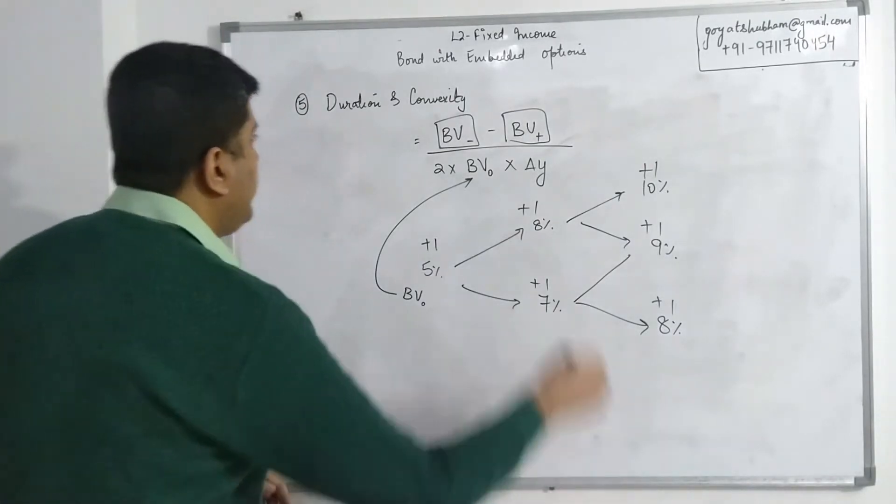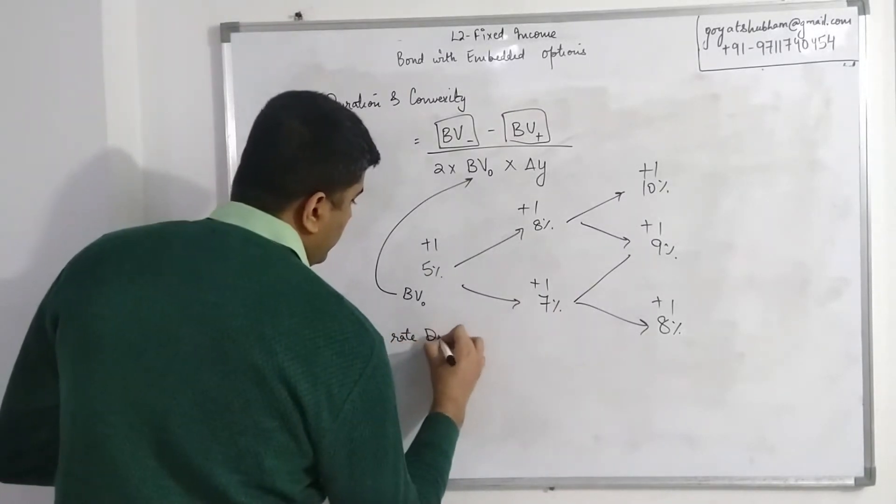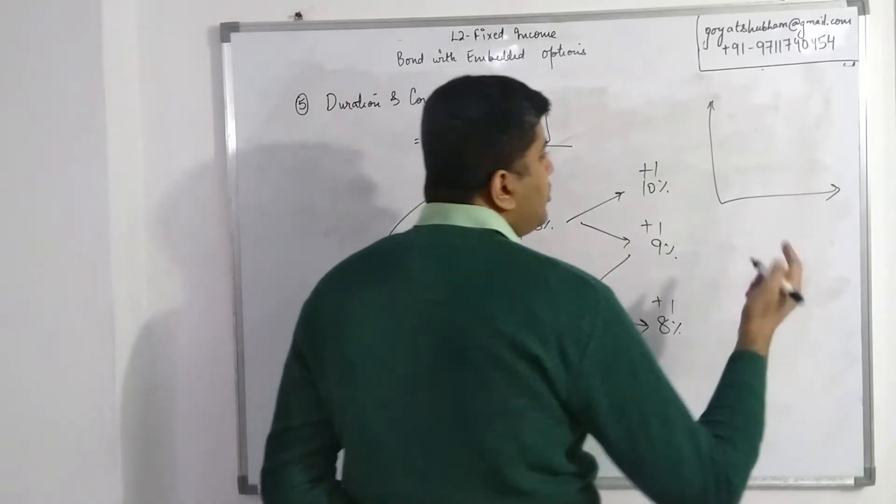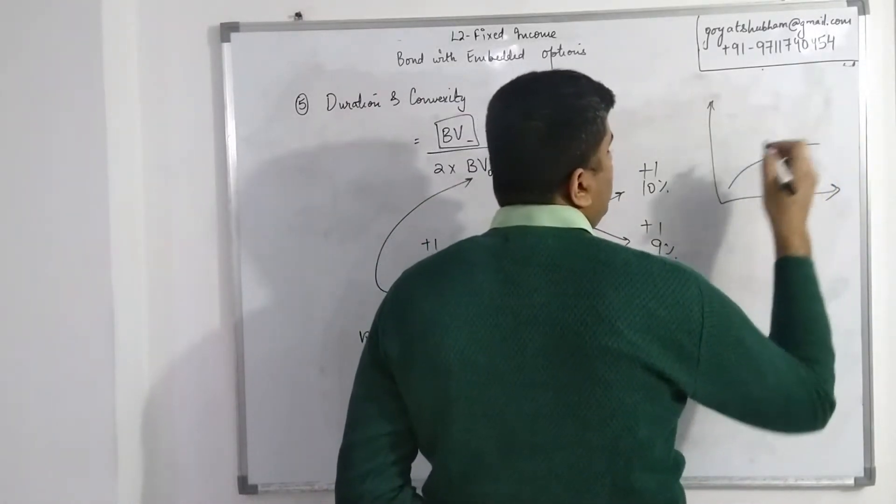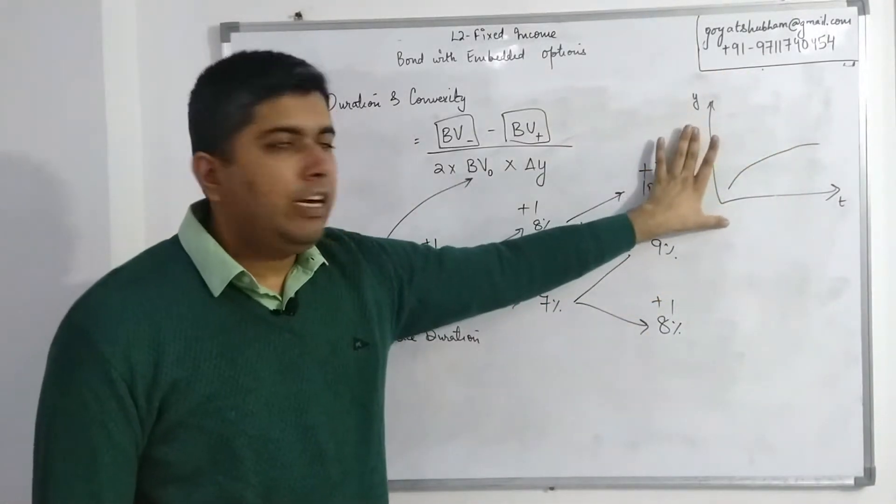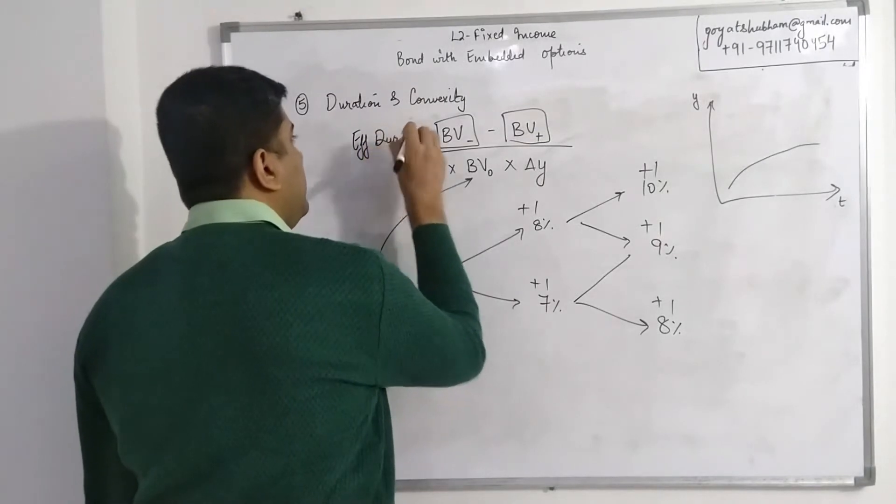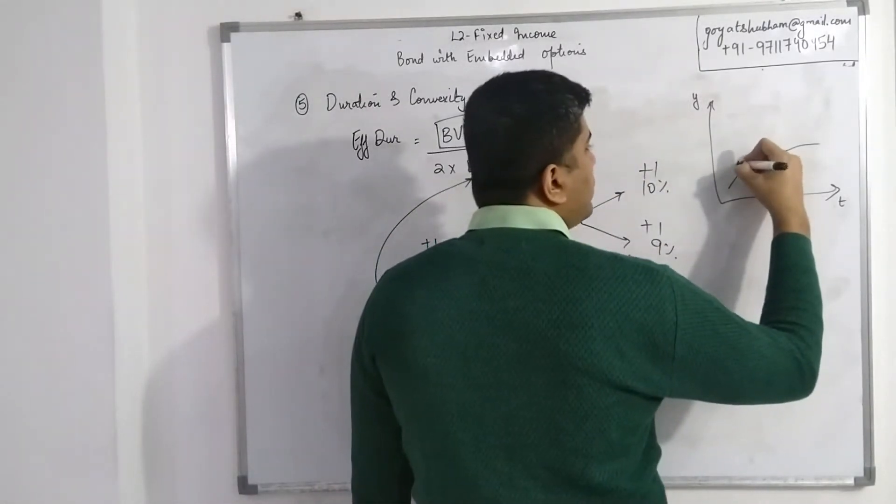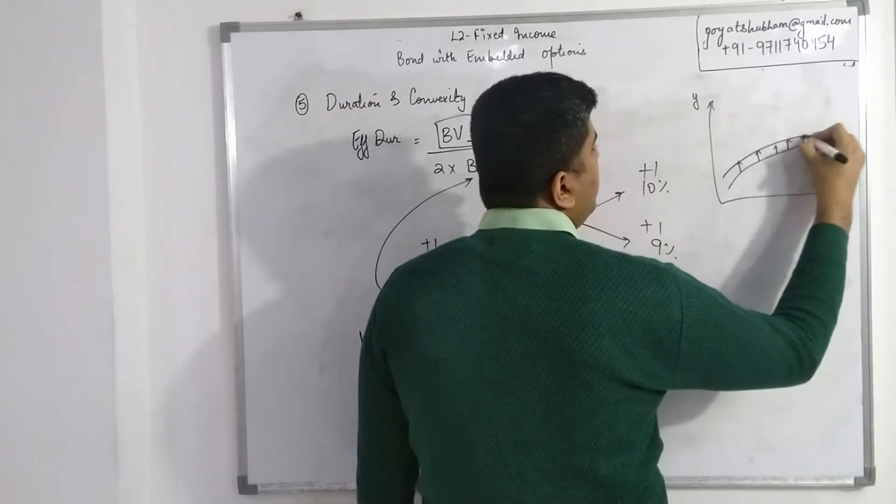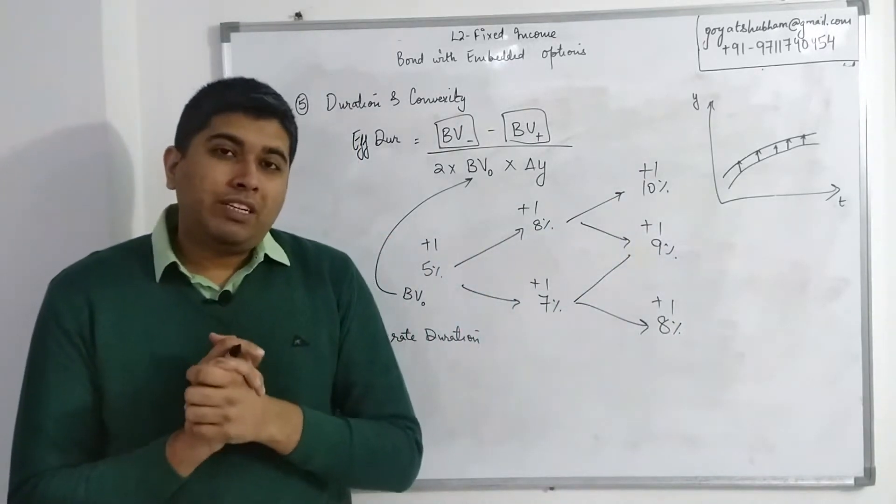This is the discussion about effective duration. We also have something known as key rate duration. If I talk about a graphical representation, the term structure could be something like this: as the time progresses, this is my yields. Normally when we have this kind of term structure for any interest rates, the effective duration that we just discussed measures how much my bond is going to change if there is a parallel shift—if the entire curve shifts parallelly upwards or downwards, which means throughout all durations the interest rates are changing.